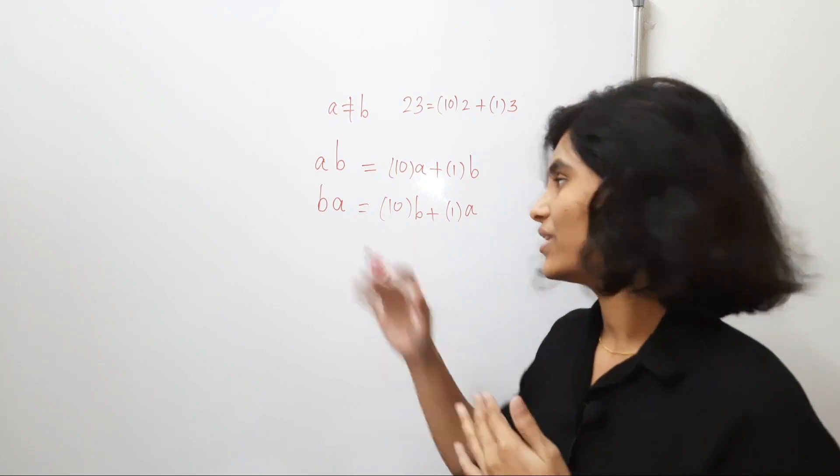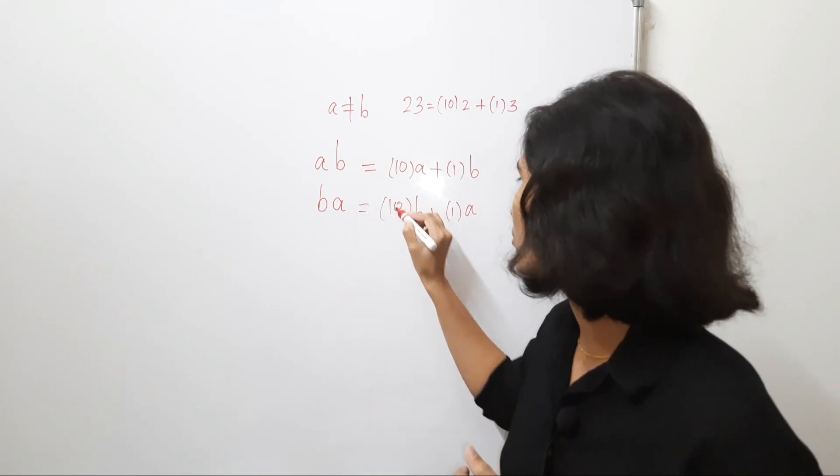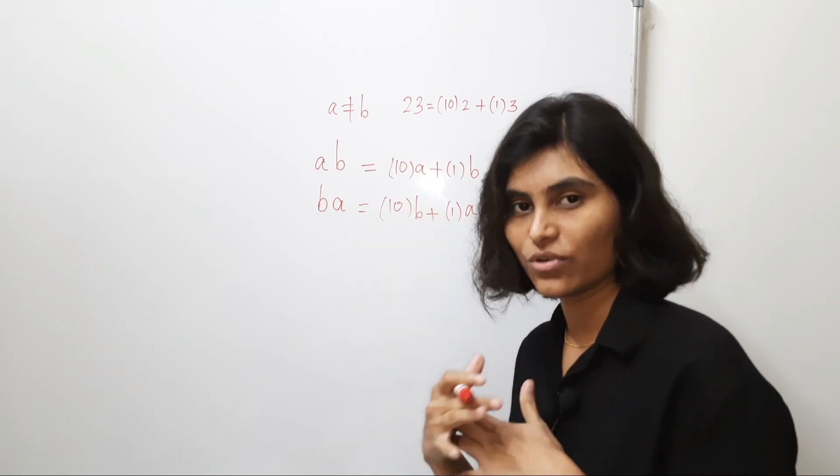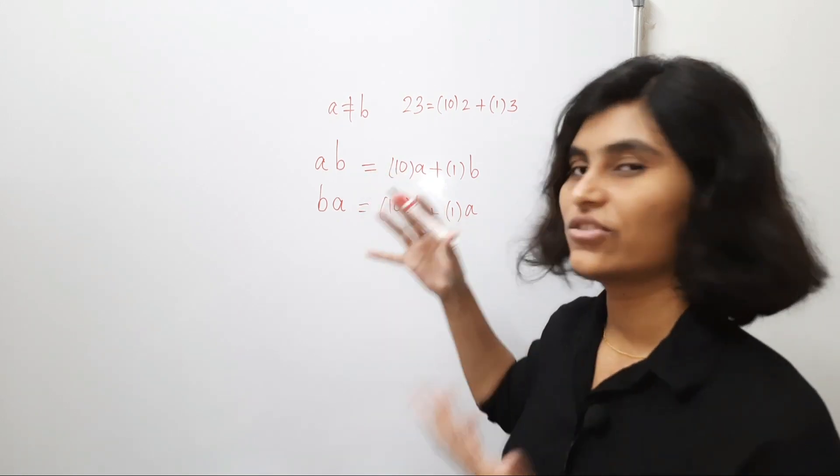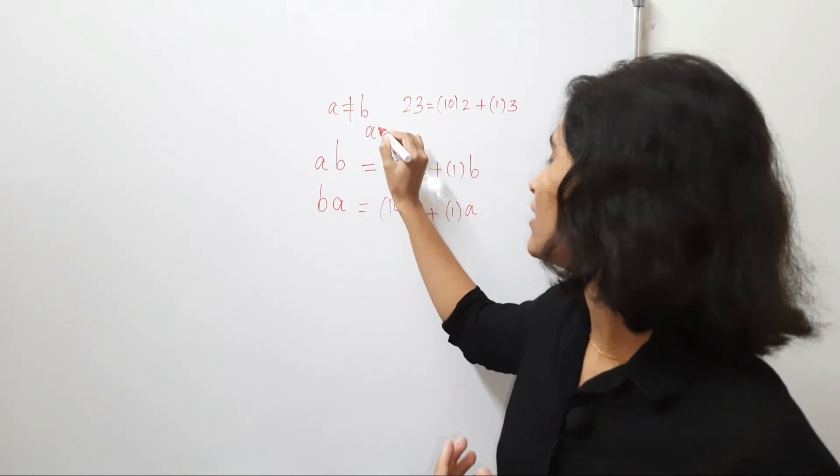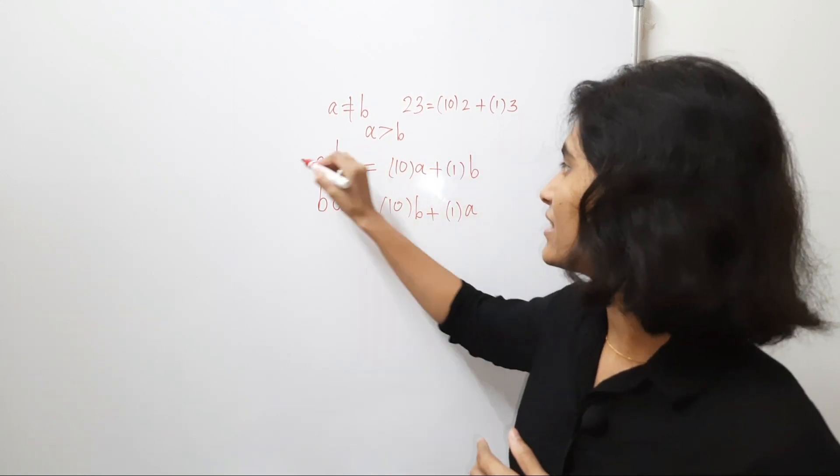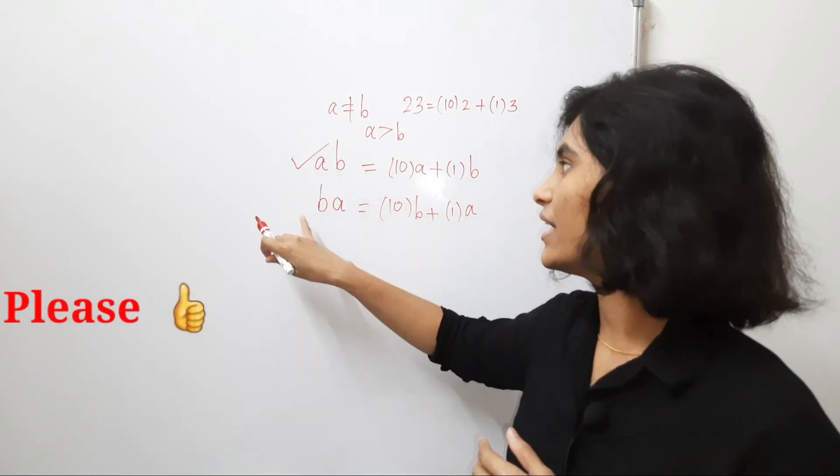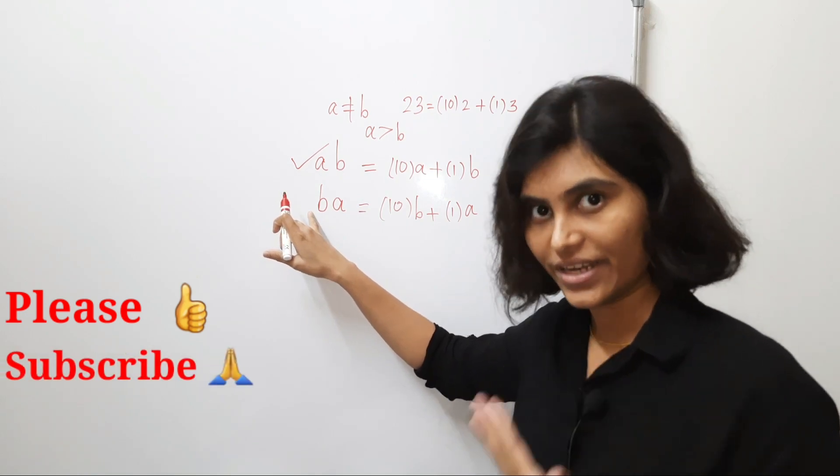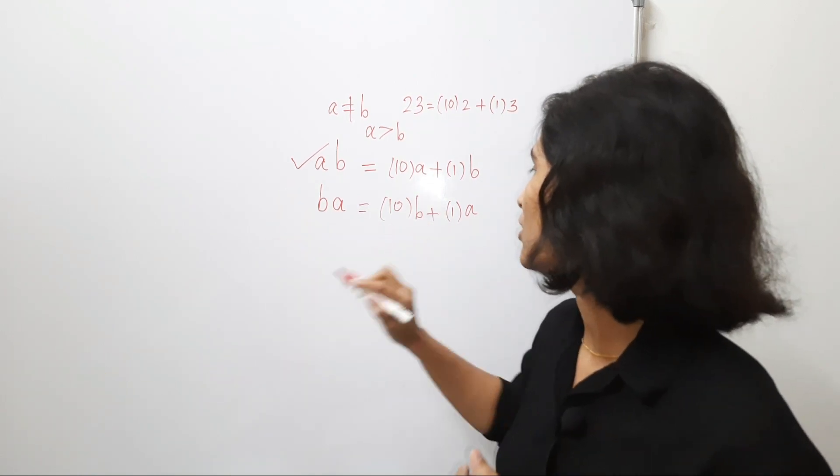Now, third step is, we just have to take the bigger number and subtract the smaller number from that. So, for that, let's assume that this A is bigger than B. So, this number is bigger than the number BA. Now, just take the difference.